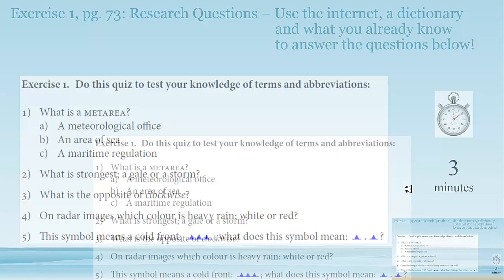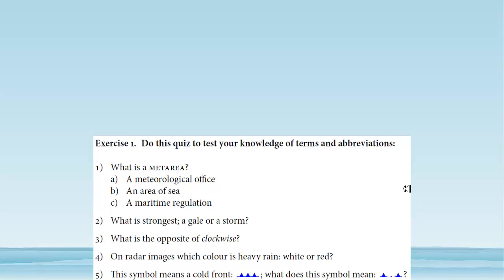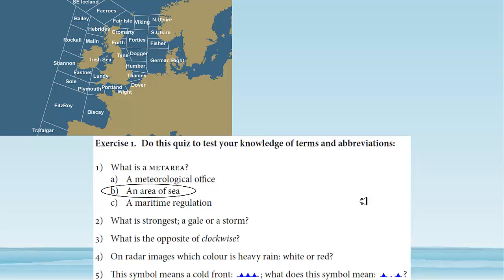Let's look at the answers to exercise one. What is a met area? Well, if you've gone through Unit 4A, you'll know that it's an area of sea. When the shipping forecast comes on BBC4 about four times a day, they're referring to these different met areas, and you sort of need to know them in order to understand the broadcast. Here you have all the different areas around Great Britain extending all the way down to Spain and Portugal.